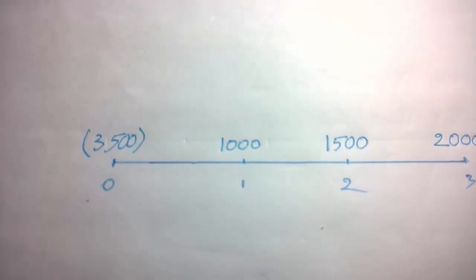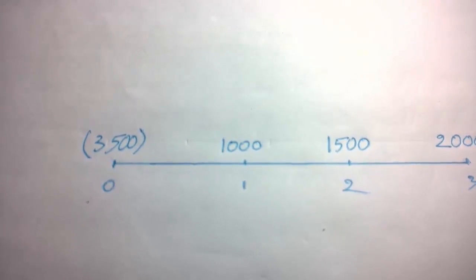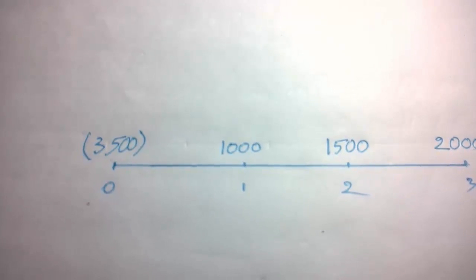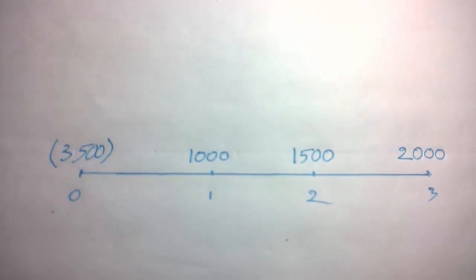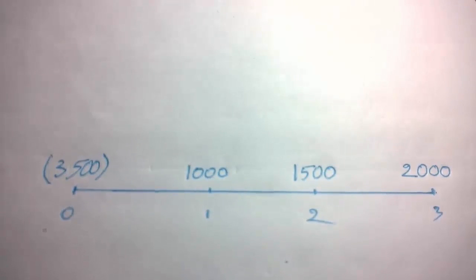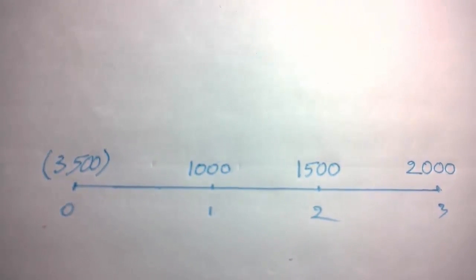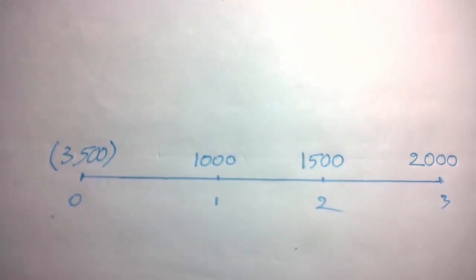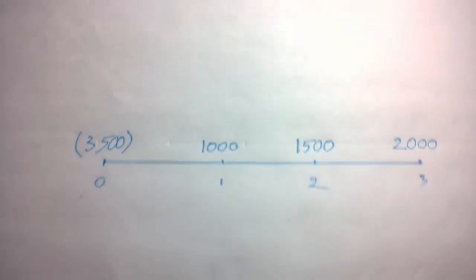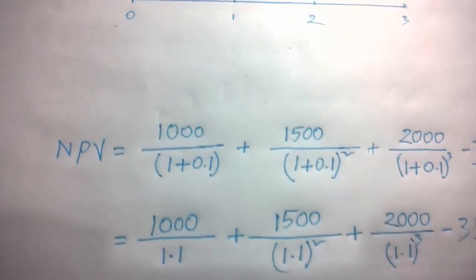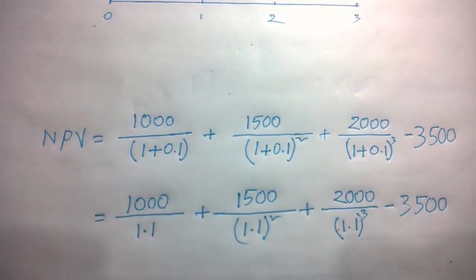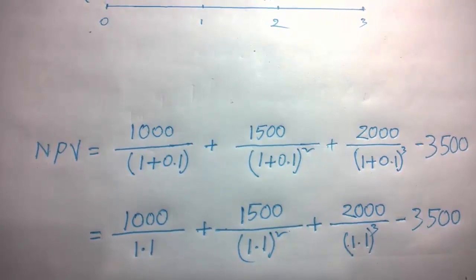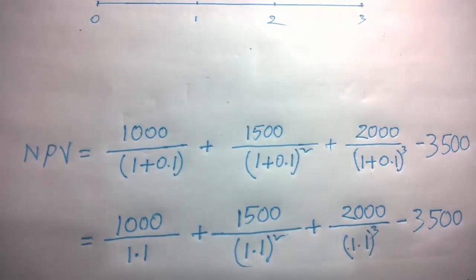The difference between the initial investment and present value of all cash inflow is called the NPV or net present value. So we can write the equation as this.